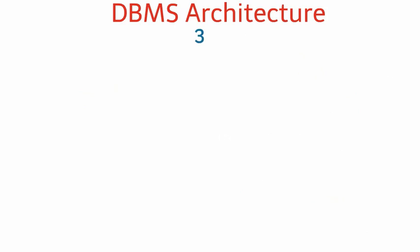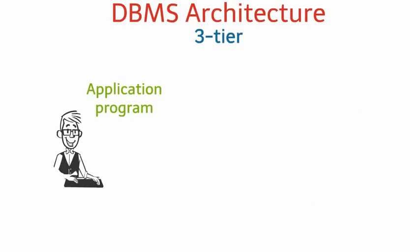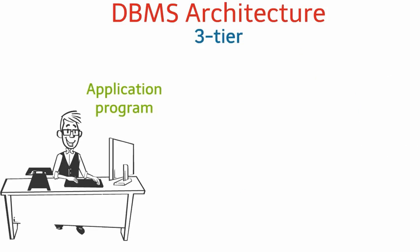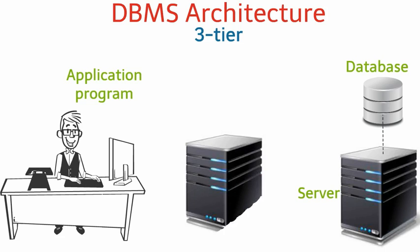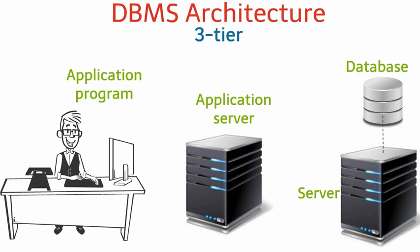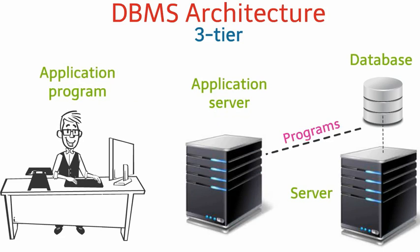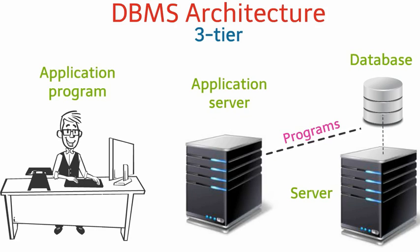In three-tier architecture, the application program runs on the client side and the database is stored on the server. However, unlike two-tier, an intermediate layer called the application layer is stored on a separate server. This layer stores the programs that access the database from the database server.